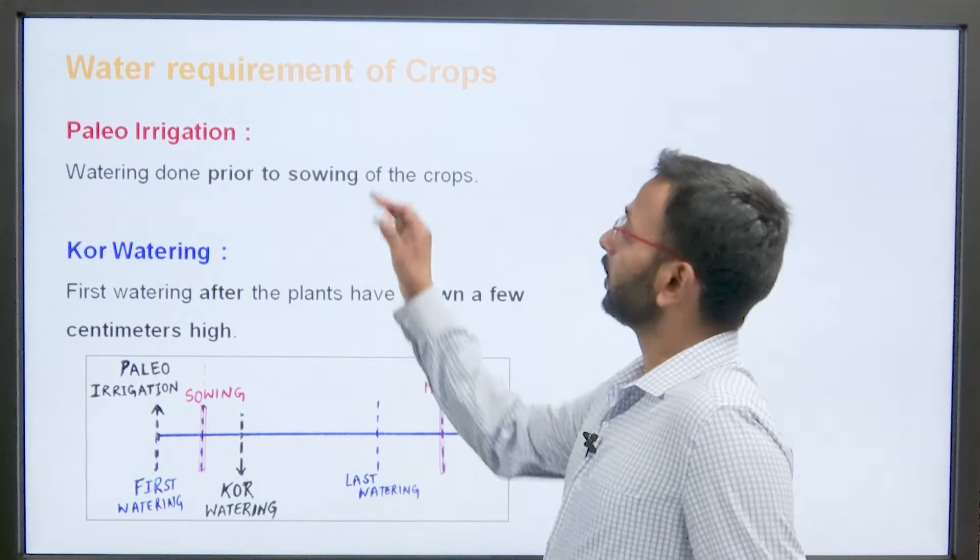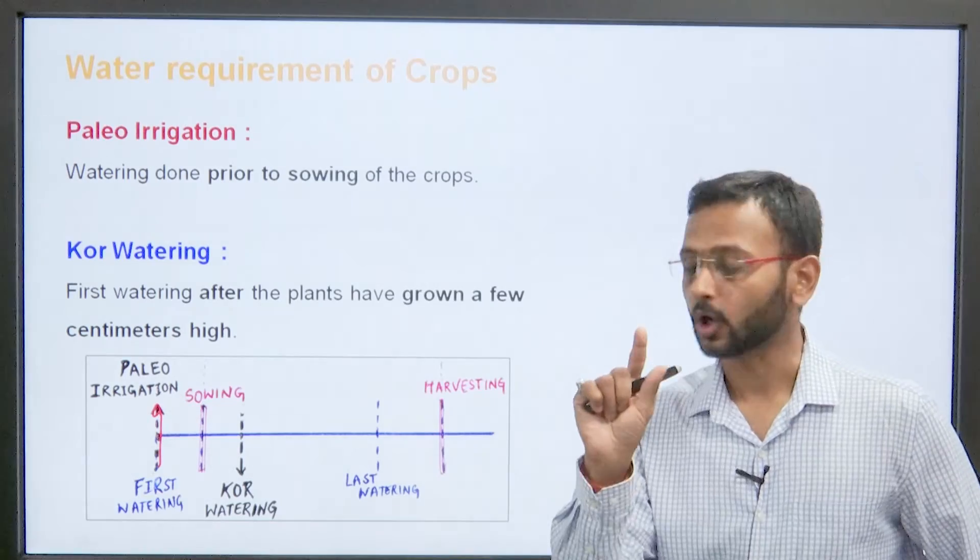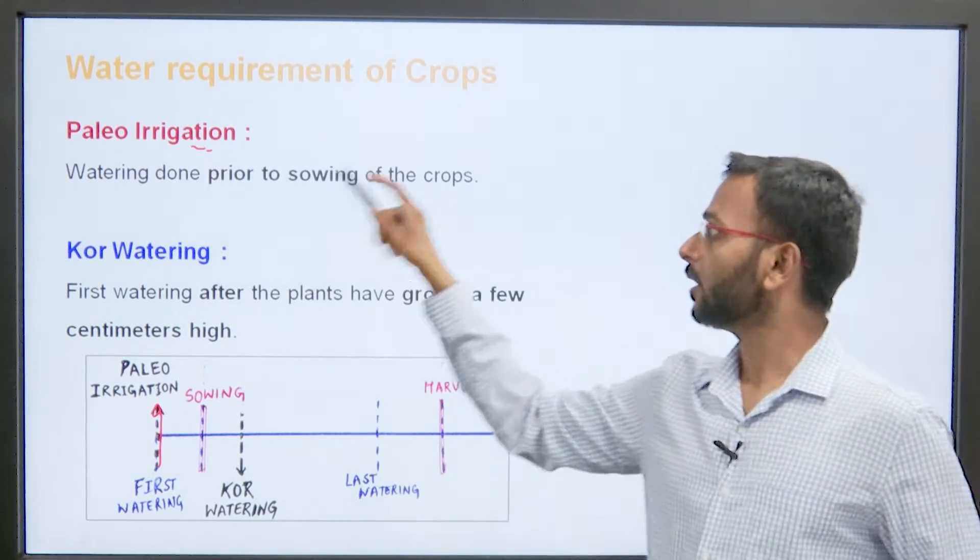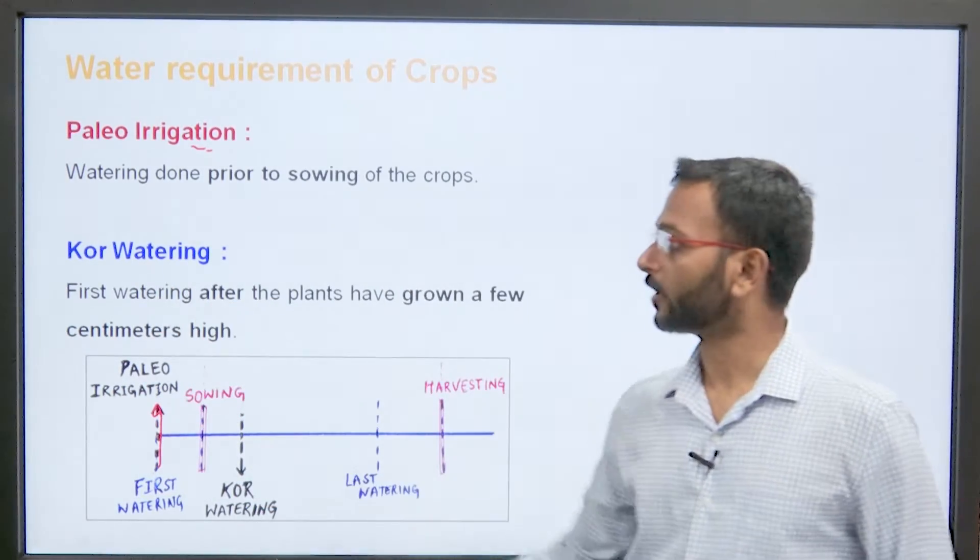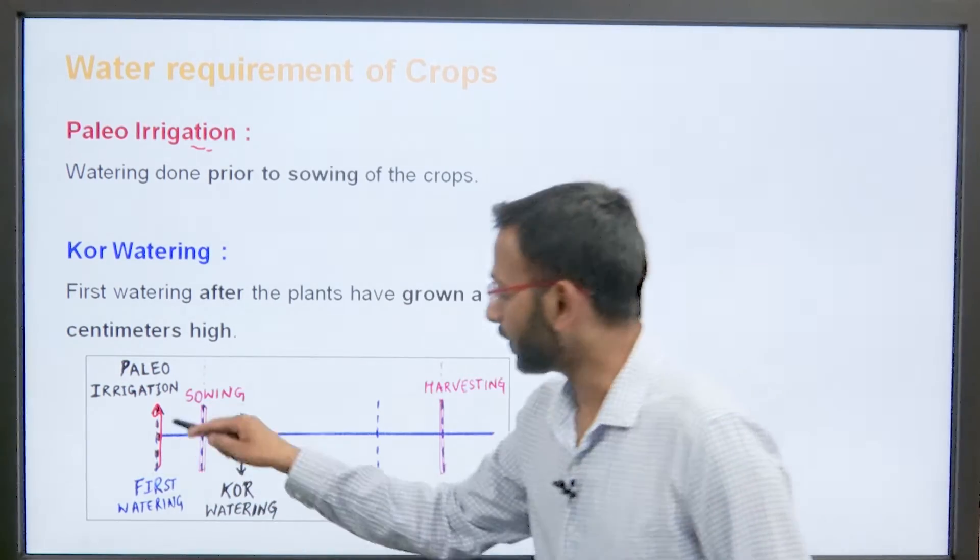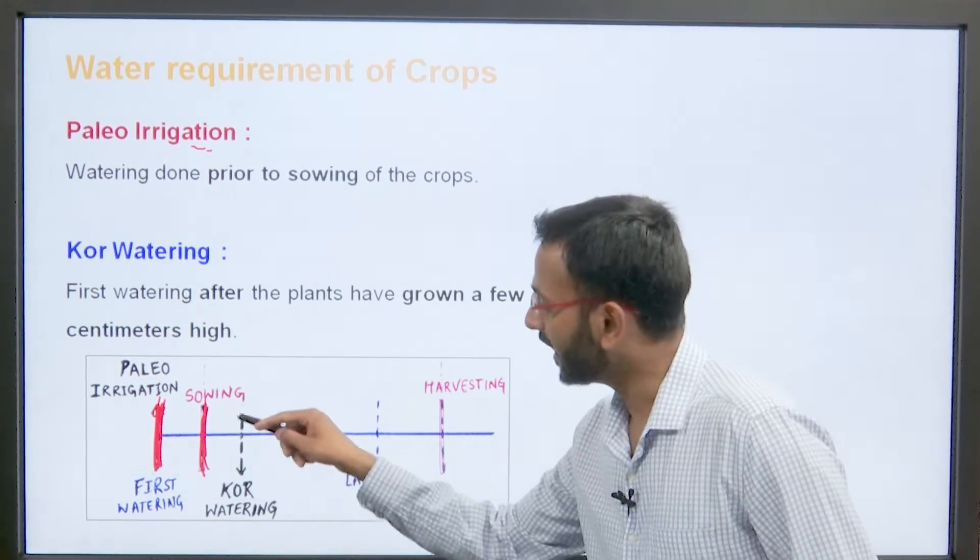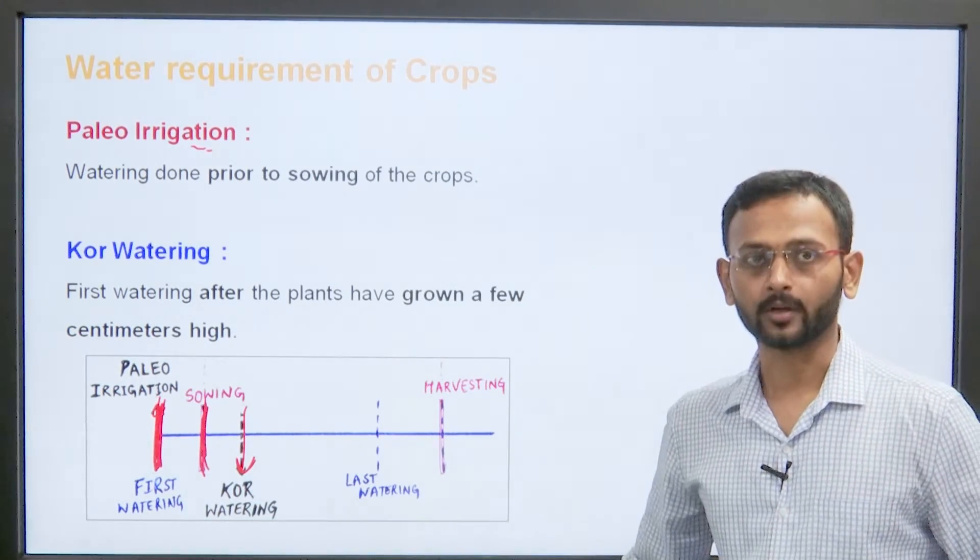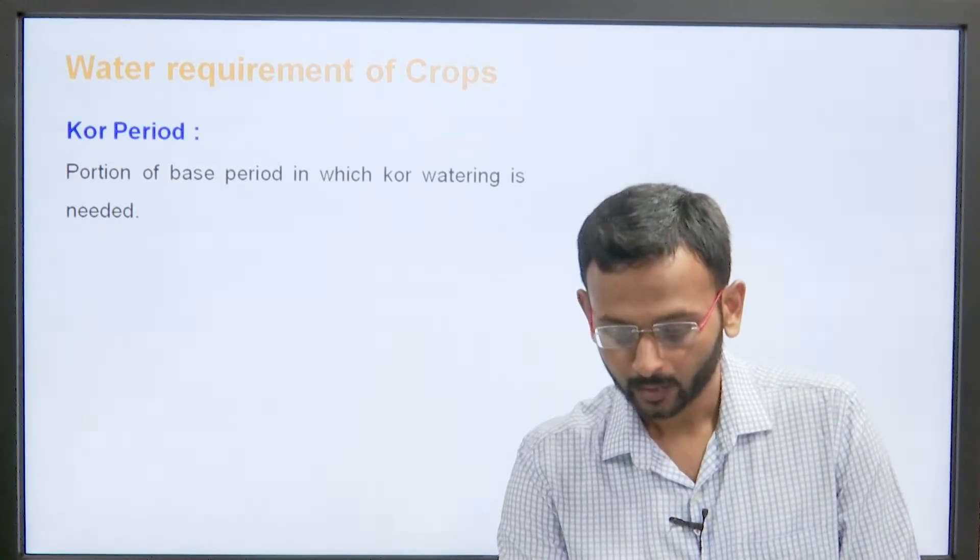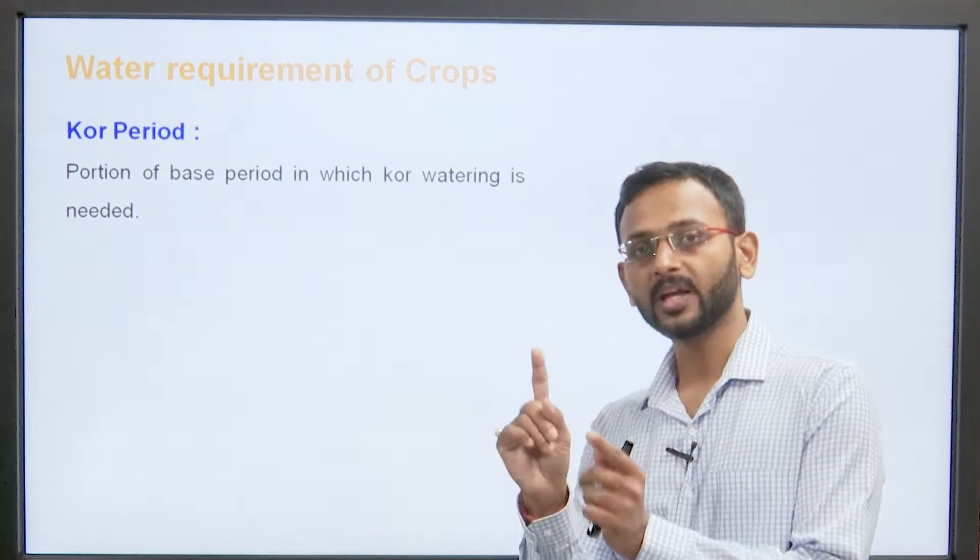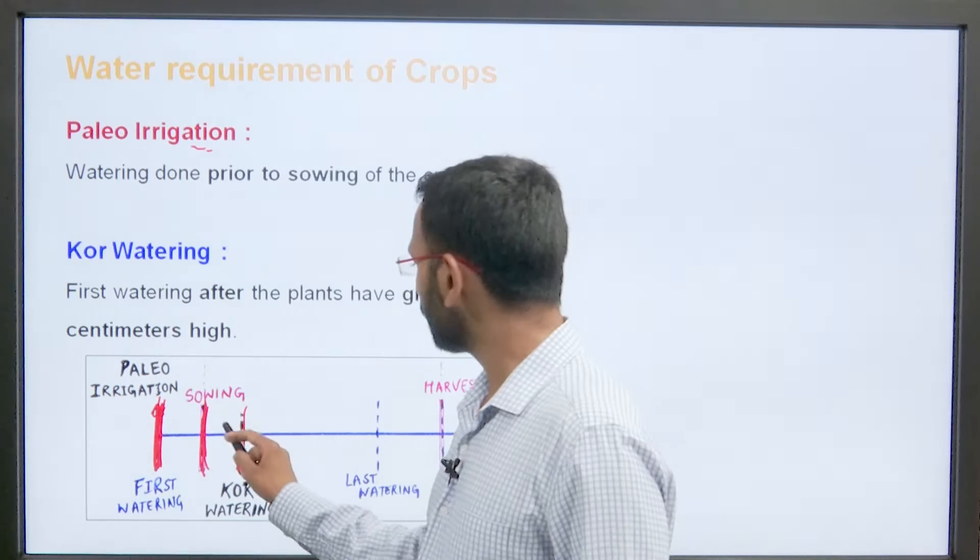Hum baat karthate hai eek naam diya gaya hai paleo irrigation. Joh paani watering aap kar rahe hai before the sowing of the crop, that is called as the paleo irrigation. So, watering done prior to the sowing of the crop is called as the paleo irrigation. Core watering is the first watering after the plants have grown a few centimeters high. Yadhi hum timeline pe dekha hai, to aapne pahali watering kari hi. That is called as the paleo irrigation. Fir aapne crop ko sow kiya, then us ke baad jo pahali watering dhi gai hai after the sowing of the crop that is called as core watering. When it is given, jab plants kuch thode height mein bađe ho jae. Core period kya hoata hai? Kitne dinon baad sowing ke aapne pahali watering dhi hai. Portion of the base period in which core watering is needed. That is called as the core period.